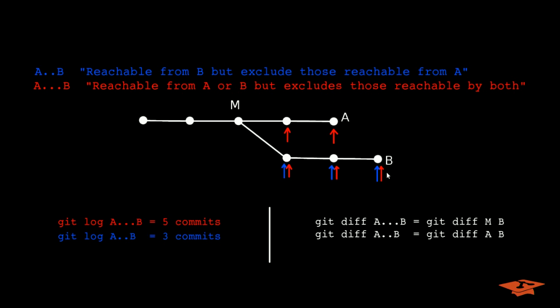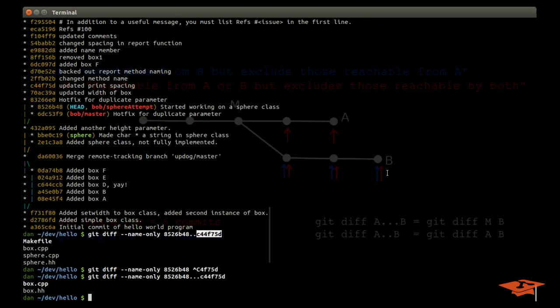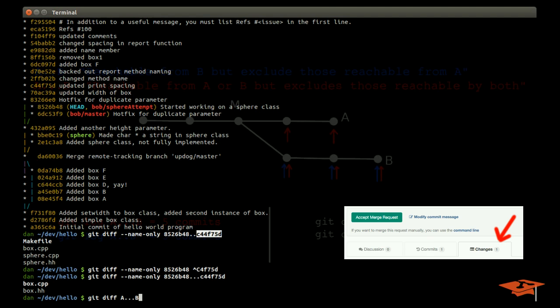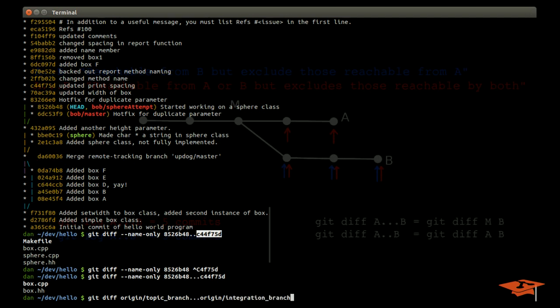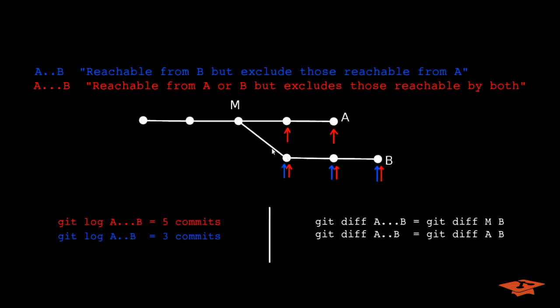Because by definition it says here to git diff A triple dot B is the difference of the B commits back to the last merge point between B and A. So what's cool about this is that if you've ever used GitLab or know anything about it, this git diff A triple dot B is exactly what the changes tab of your merge request is showing.